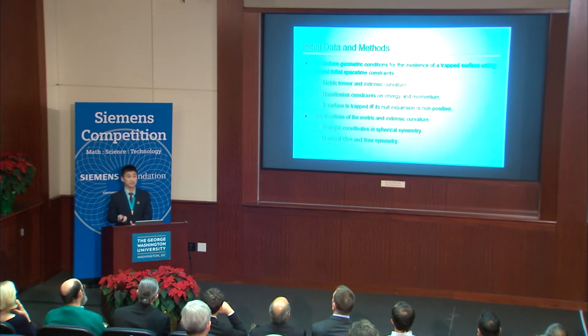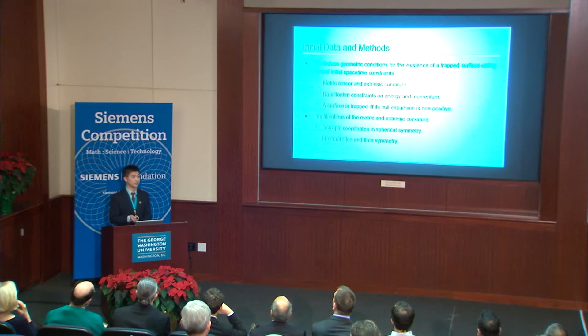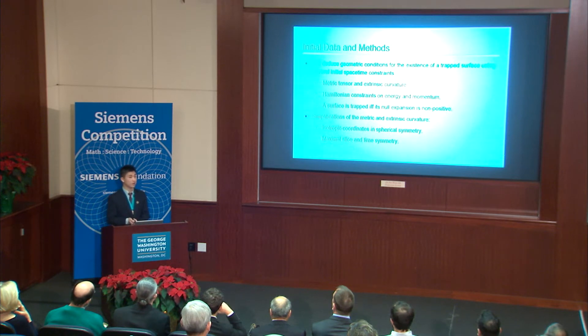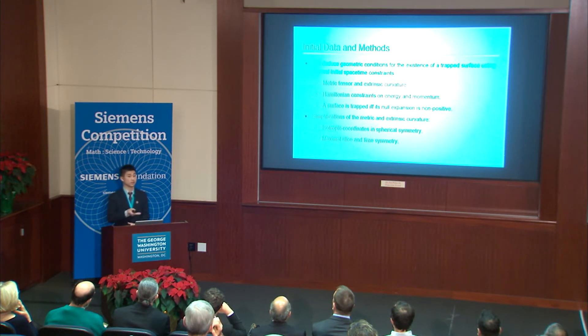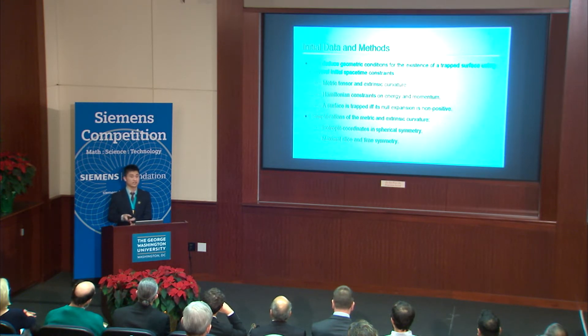We also have what is called the expansion condition. On any two-surface in the time slice, we have an expression for the null expansion, which describes the rate of area expansion of an outward-facing shell of light on the surface. The surface is trapped if and only if this expression is non-positive. We also have simplifications of our initial data in spherical symmetry, the maximal slice, and time symmetry. In spherical symmetry, we have access to isotropic coordinates, which allow us to greatly simplify the metric and rewrite it in terms of a conformal factor. In the maximal slice, the trace of the extrinsic curvature — equal to the mean curvature — is zero. In time symmetry, the entire extrinsic curvature is identically zero.